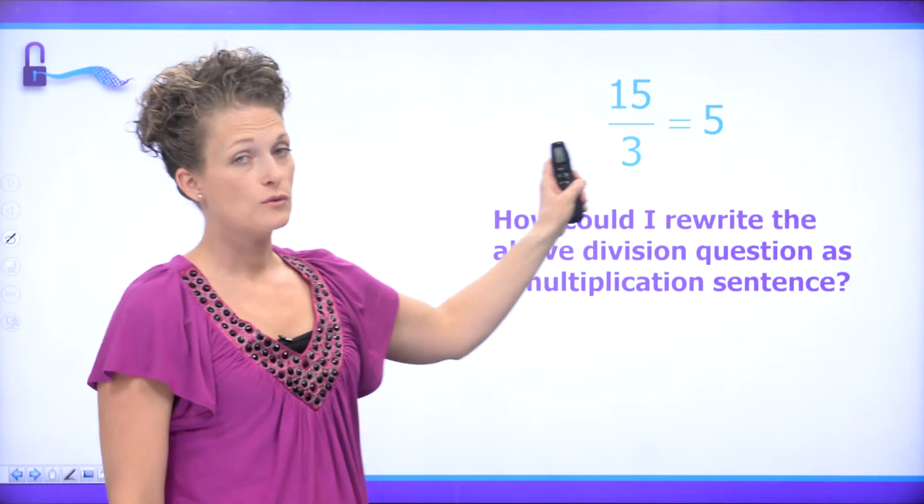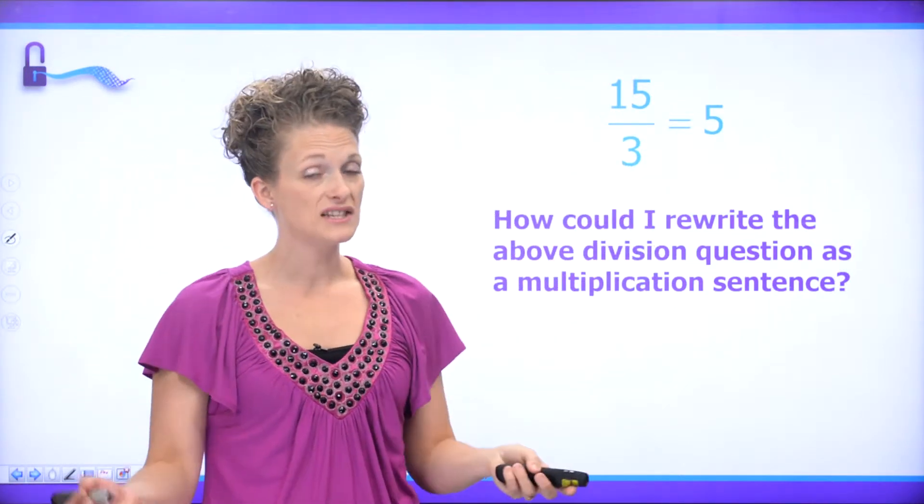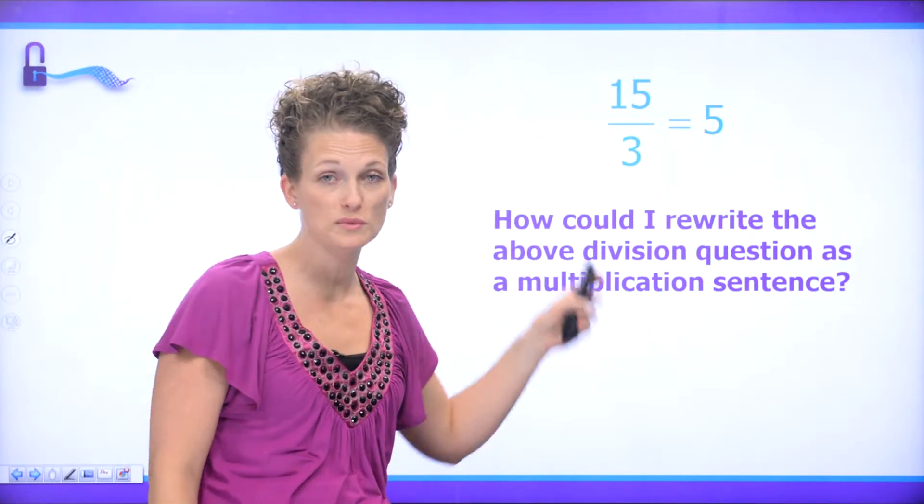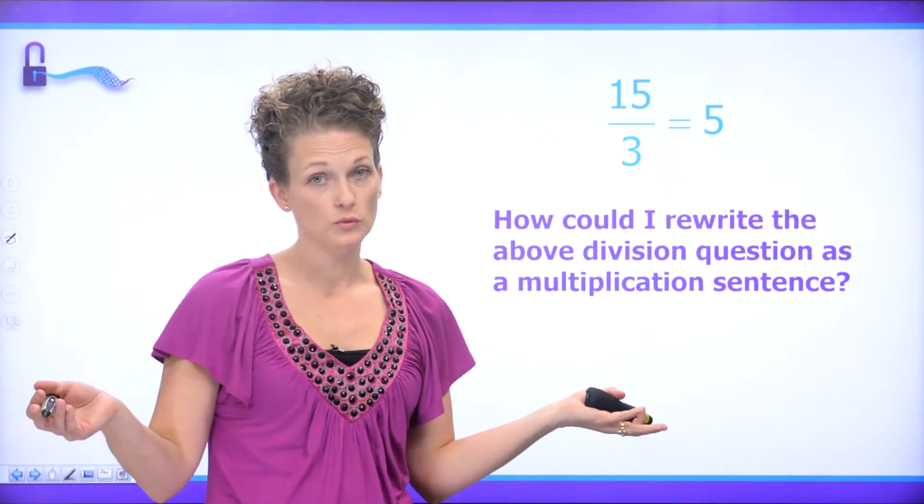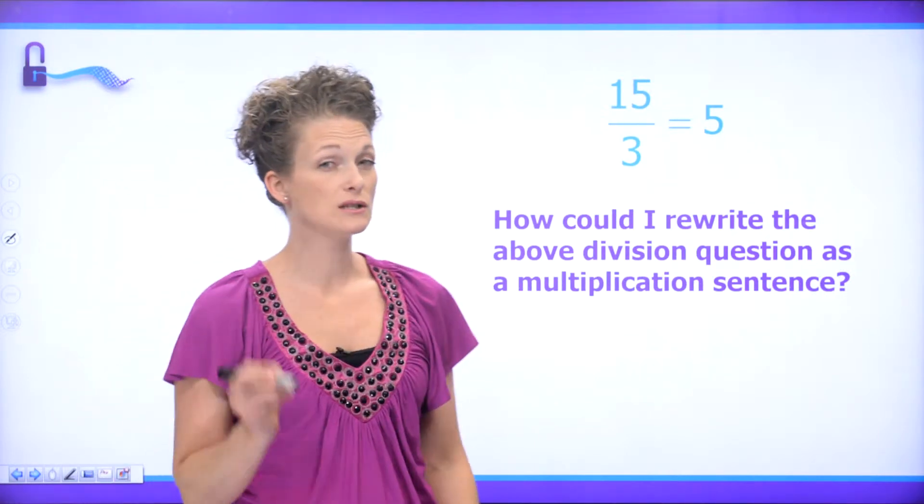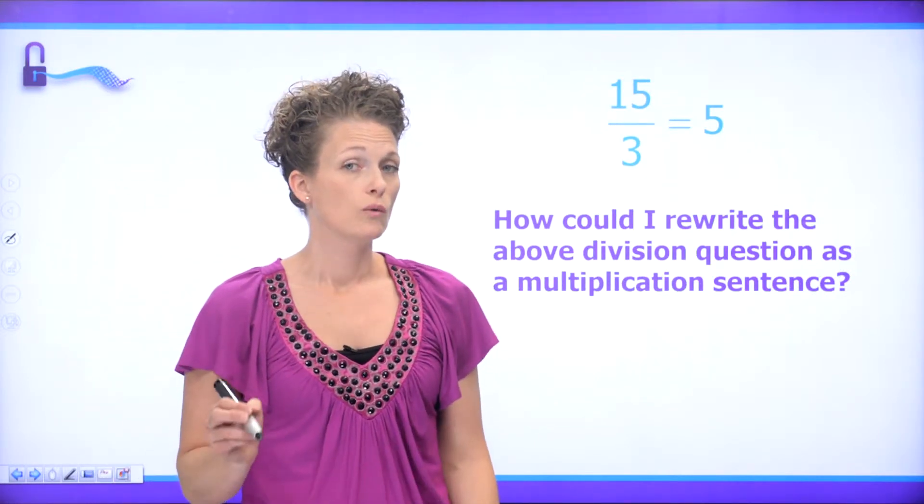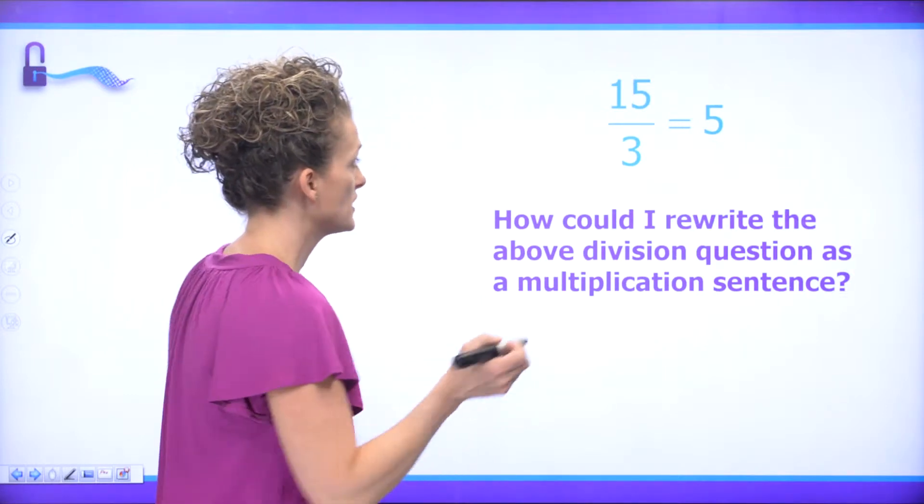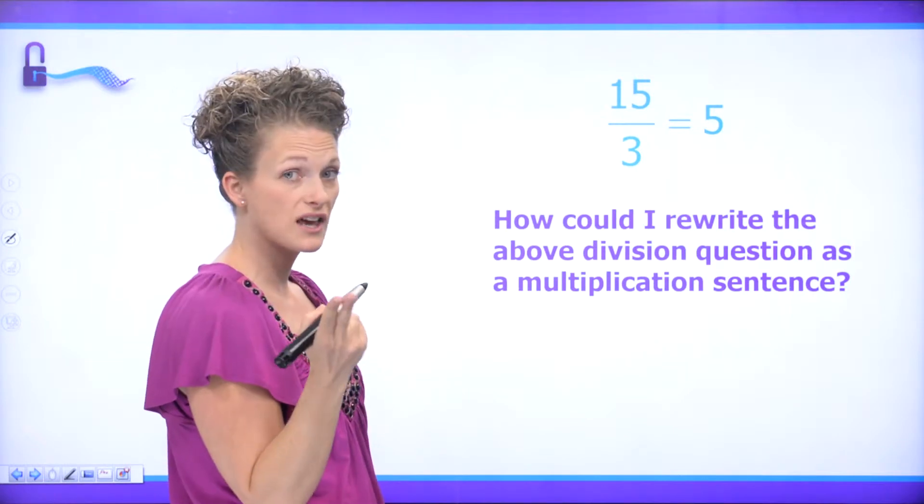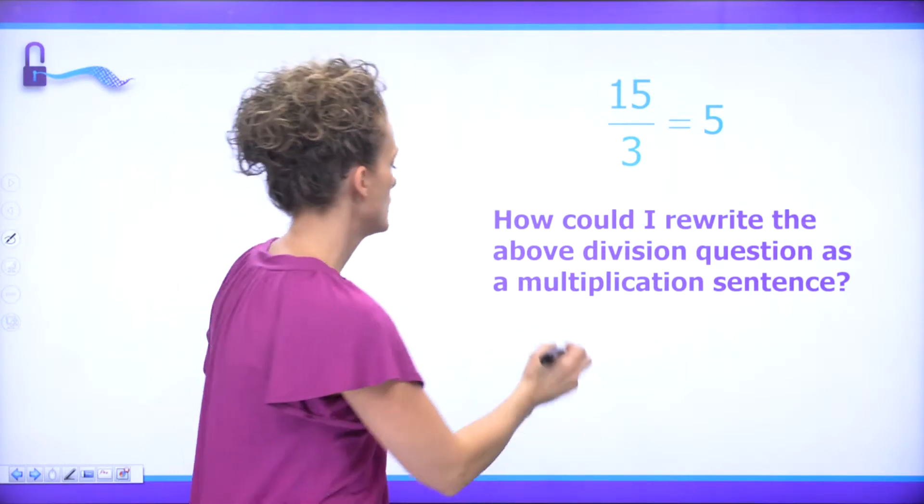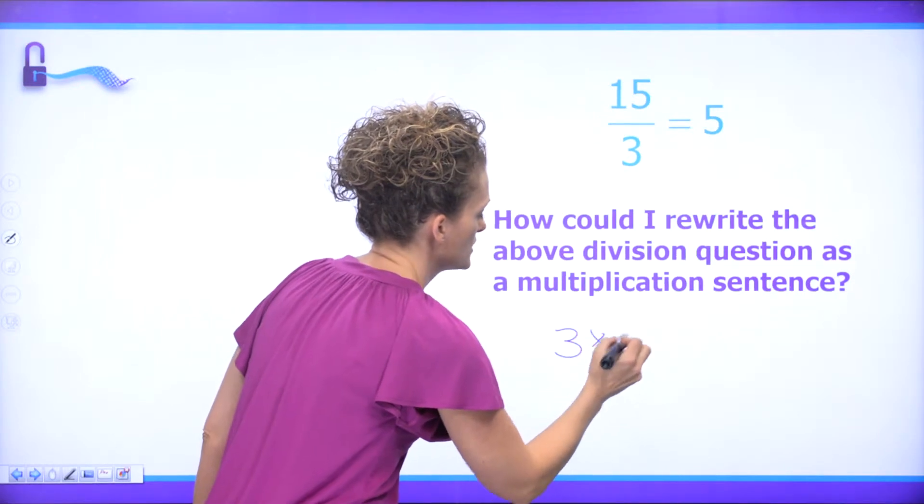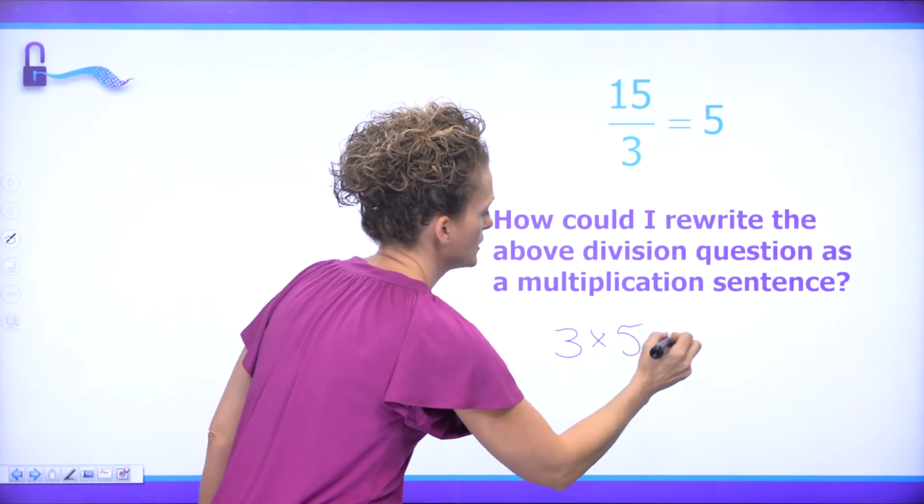15 divided by 3 is equal to 5. That's a simple division question. You want to take 15, divide it into three groups, and you would end up with five groups. So how can I rewrite this question so that it's a multiplication question? Well it just simply means we're going to use these same numbers, multiply two of them together here to get the other number. Well there's really only one way to do that: 3 times 5 equals 15.